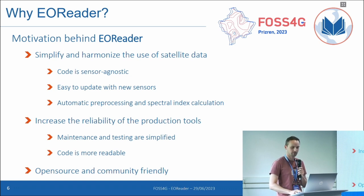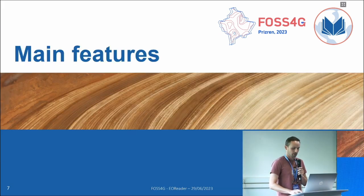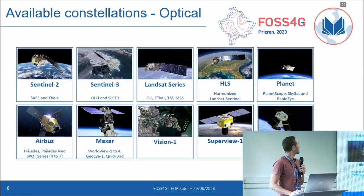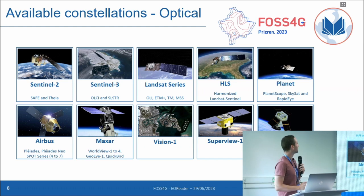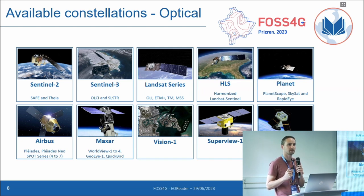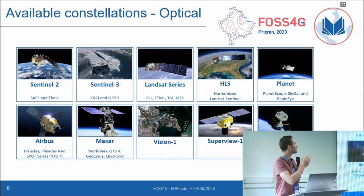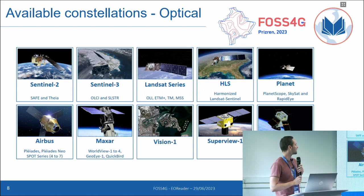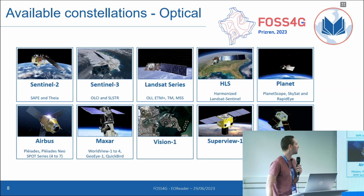We wanted to go open source and community-friendly, so we have a GitHub and Twitter. EOReader handles a lot of optical constellations, like the free ones — classic Sentinel-2, Sentinel-3, Landsat, and also the harmonized Landsat Sentinel. But it also handles some commercial data we face during activations in CMS, such as Planet Scope, SkySat, the Airbus ones, Maxar, and some exotic ones like Vision-1, SuperView, or Geosat.